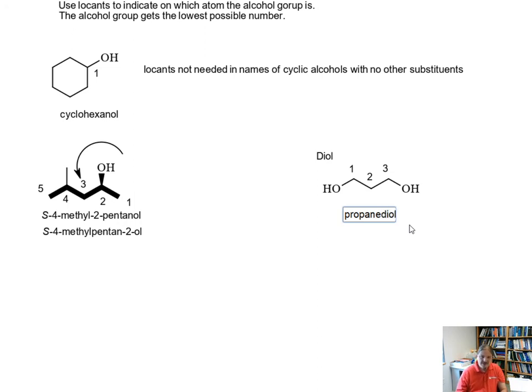Instead of calling it propanol, this molecule gets the suffix diol. We put these locants up front. So this could be 1,3-propanediol, though it is perfectly okay to put the locants again right in front of the suffix. So you can also describe this as propane-1,3-diol.